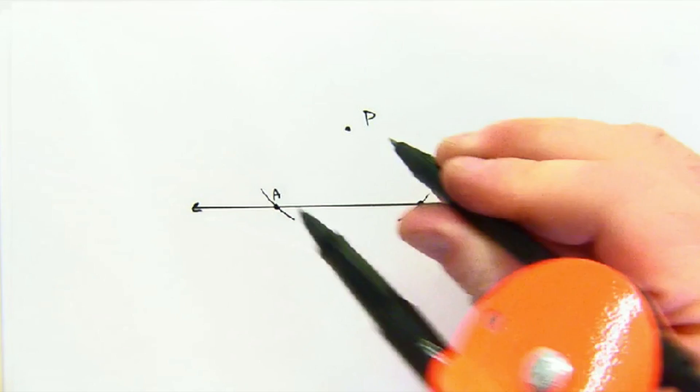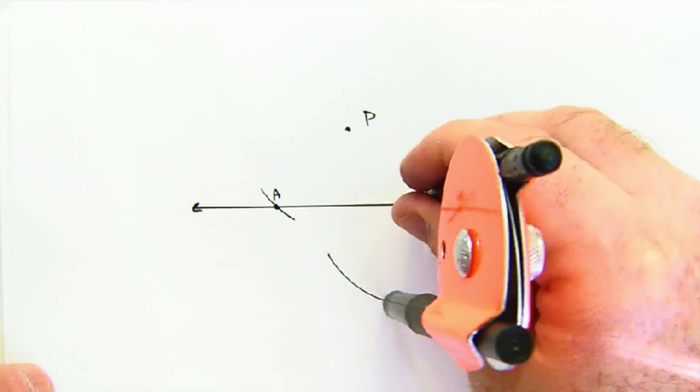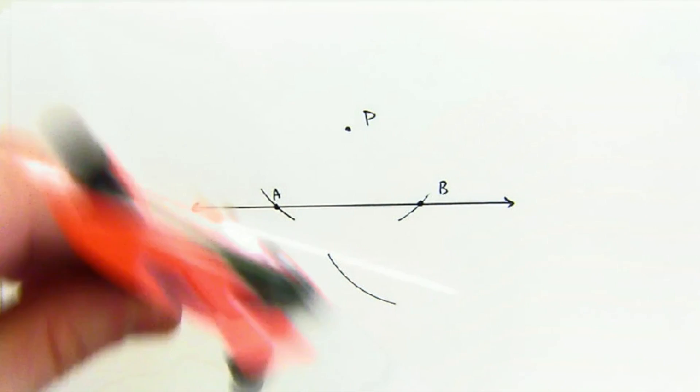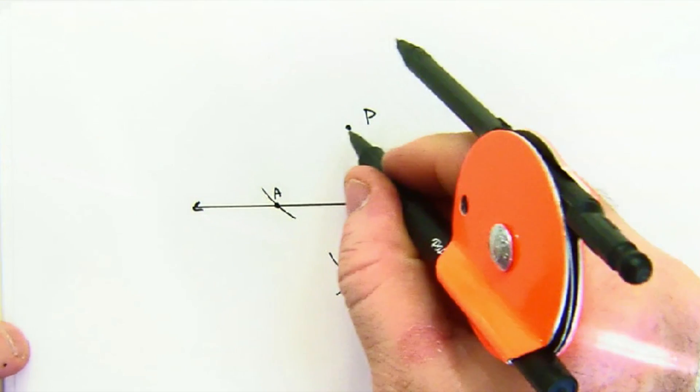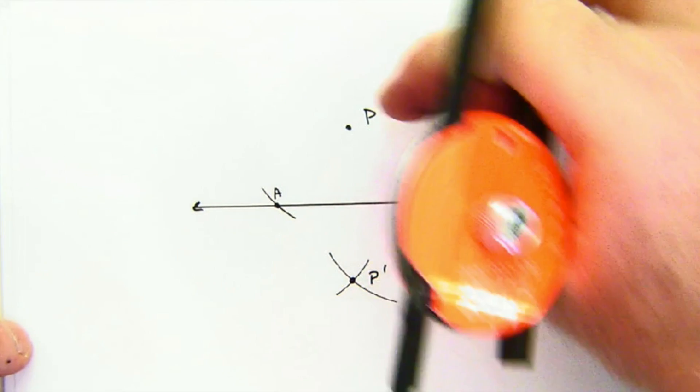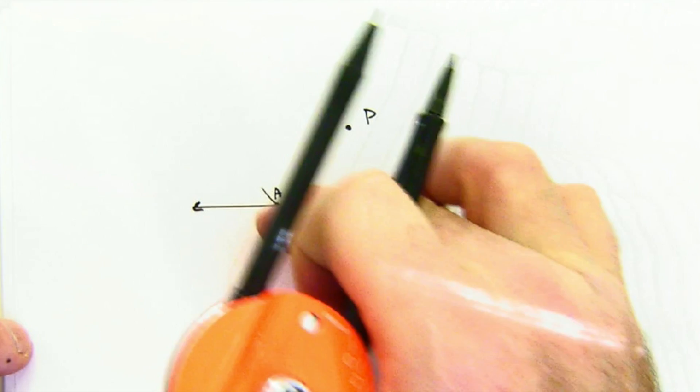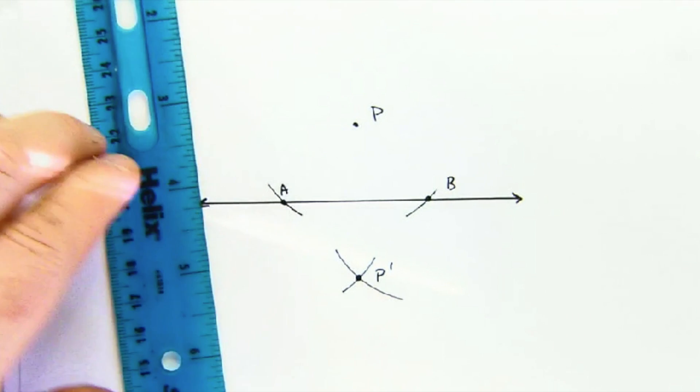If we leave our compass the same physical length and do an arc from B and from A, we create a duplicate of P but on the opposite side. Because we didn't change our compass lengths, we created the exact same point, P prime, on the opposite side.